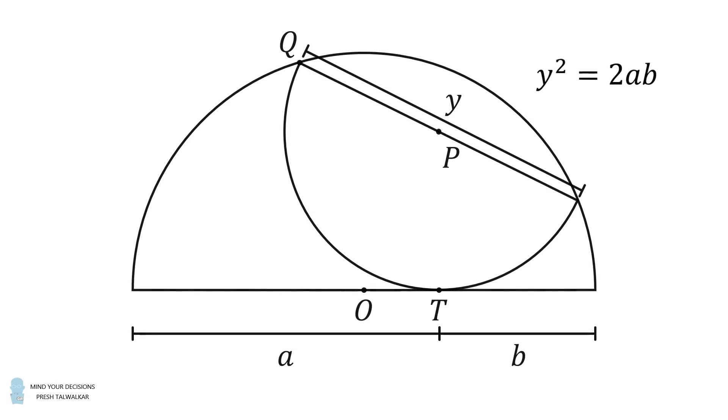So we solve part 2 of the problem. We have y as a function of a and b. If we wanted to be more explicit, we could say y is equal to the positive square root of 2ab.